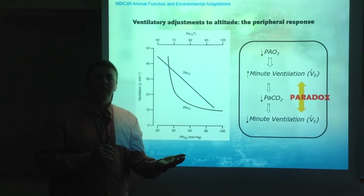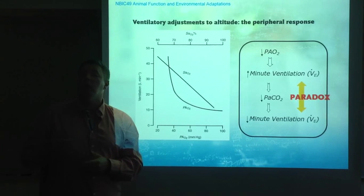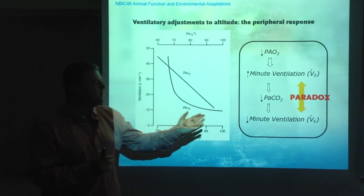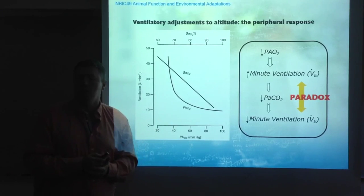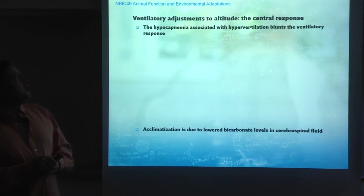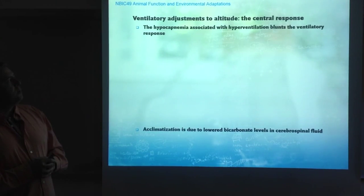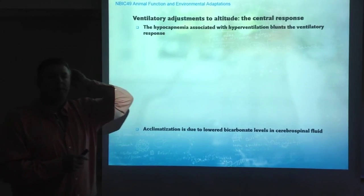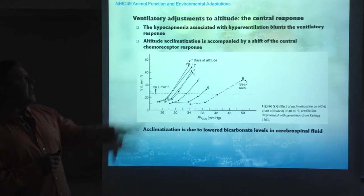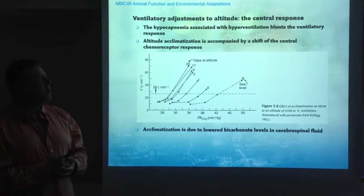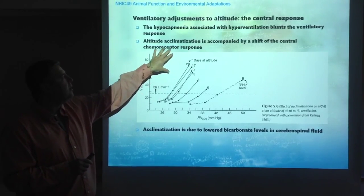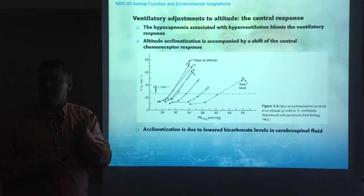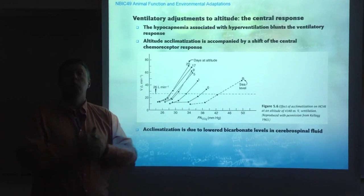Oxygen is telling the body to breathe more; CO2, because we are eliminating too much of it, is telling the body to breathe less. This is the paradox the body faces at altitude — and it is an important battle, ultimately responsible for the capability of adapting or acclimatizing better or worse to altitude. During acclimatization, the central chemoreceptor response shifts to allow the oxygen response to take priority.